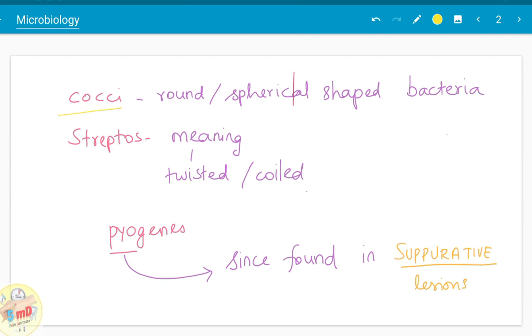Cocci means round or spherical shaped bacteria and Streptos means twisted or coiled in appearance. The name pyogenes is given because it is found in suppurative lesions, that is pus forming lesions.